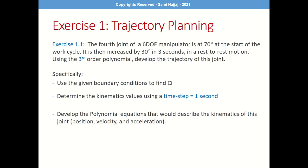Now we do an exercise. The fourth joint of a six-degree-of-freedom manipulator is at 70 degrees at the start of the work cycle. It is then increased by 30 degrees in 3 seconds in a rest-to-rest motion. Using the third-order polynomial, develop the trajectory for this joint: find the coefficients using the given boundary conditions, then determine the kinematic values at each time step of 1 second — that is, at t = 0, 1, 2, and 3 seconds.